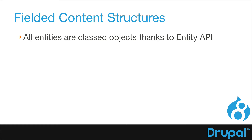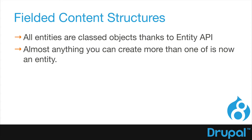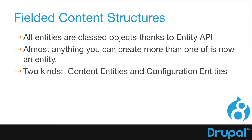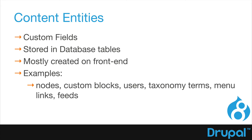In Drupal 8, all entities are classed objects thanks to the much improved entity API. Almost anything that you can create more than one of is now an entity. There are content entities and configuration entities. A content entity can have custom fields stored in database tables, mostly created on the front end — like a node, custom block, users, taxonomy terms, menu links, and feeds. Blocks are now entities, as are users and the taxonomy system. For those who've done Drupal work before, you're probably already starting to see some great potential there.